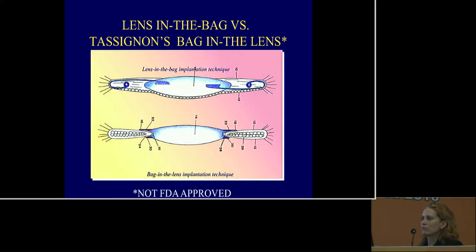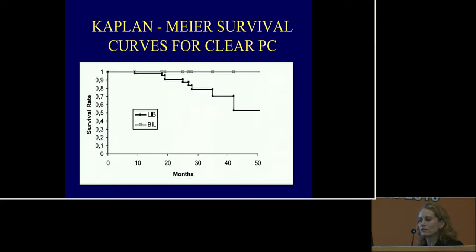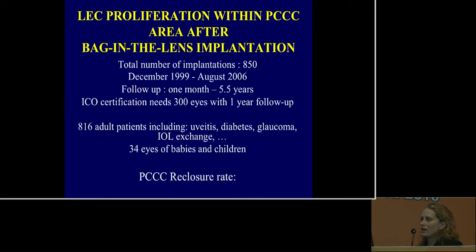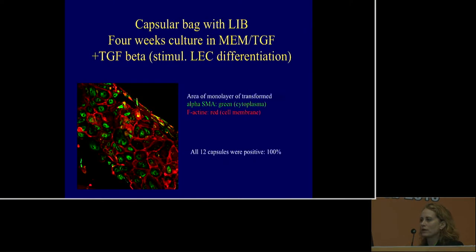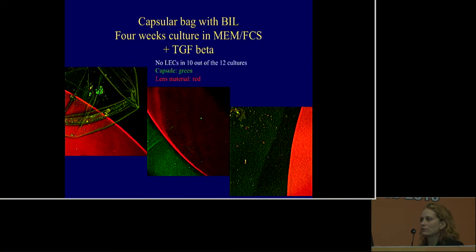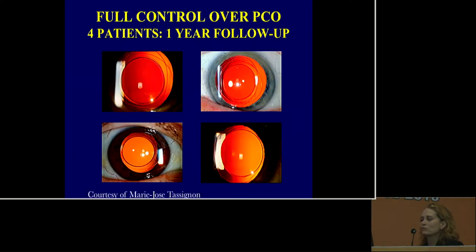Dr. Tassignon has promoted the bag-in-the-lens technique. There is a very good reason why these patients have longer-term excellent visual acuity — you have sequestration of the lens epithelial cells in the periphery. Over time, bag-in-the-lens shows absolutely no lens epithelial proliferation, because there is no place for the cells to go. They are sequestered in the periphery, whereas there is increasing PCO over months with a conventional lens-in-the-bag approach. In large series, there is a 0% posterior capsulotomy closure rate.